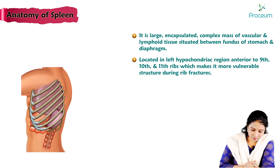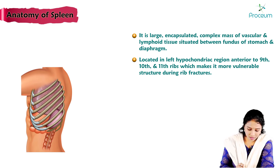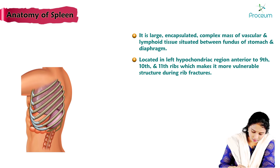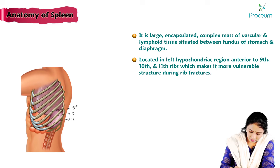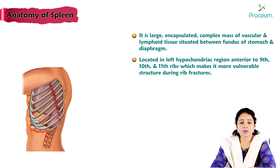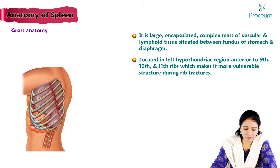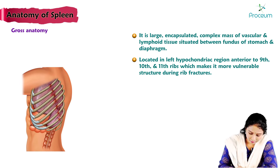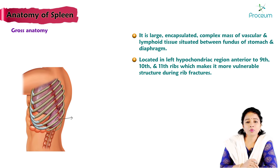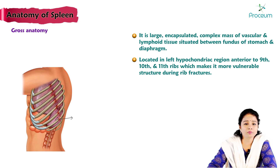Here is the lateral view of the thoracic and abdominal region showing the 9th, 10th, and 11th ribs covering the spleen. This location makes the spleen a more vulnerable structure during rib fractures — if there are rib fractures, the spleen becomes particularly susceptible to injury.